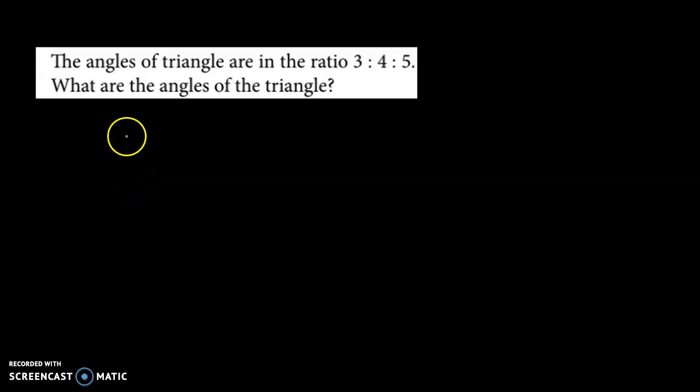Hello and welcome back. We now discuss an example from the topic ratio. The question is: the angles of a triangle are in the ratio 3:4:5. What are the angles of the triangle?